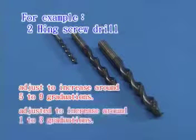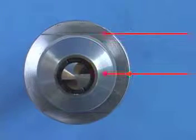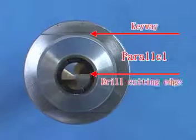If the length of the drill changes, it could also be adjusted to increase around 1 to 3 gradations. But please check to see if the drill cutting edge is parallel to the keyway of the ER collet chuck.